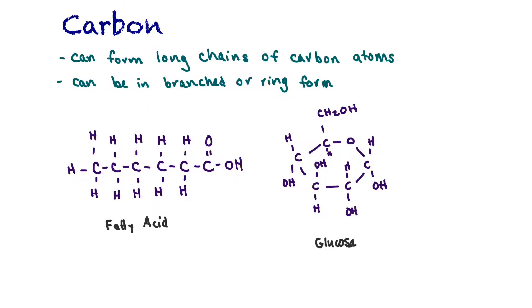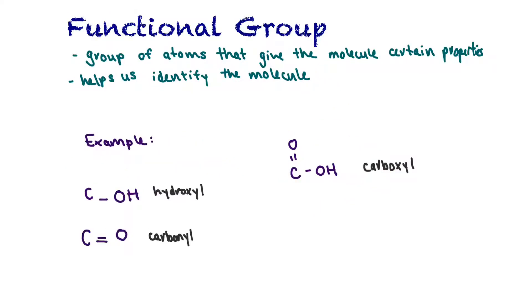Carbon can also form long chains of carbon atoms and can be found in branched or ring form. In this case right here, this is a fatty acid, and we'll learn more about fatty acids when we talk about lipids. You can see it's a long chain. It can be even longer than this. Over here, we have a ring structure, so the carbons are forming a ring. That would be, in this example, glucose, which we'll learn when we learn about carbohydrates.